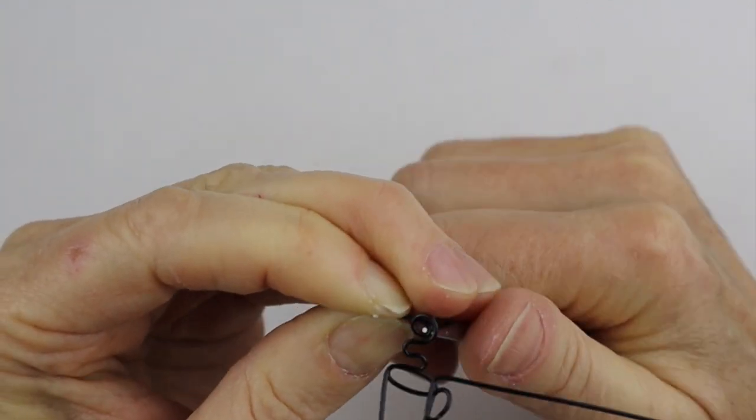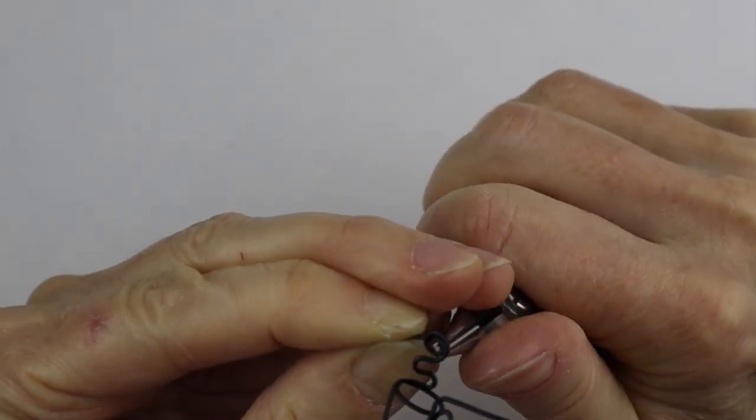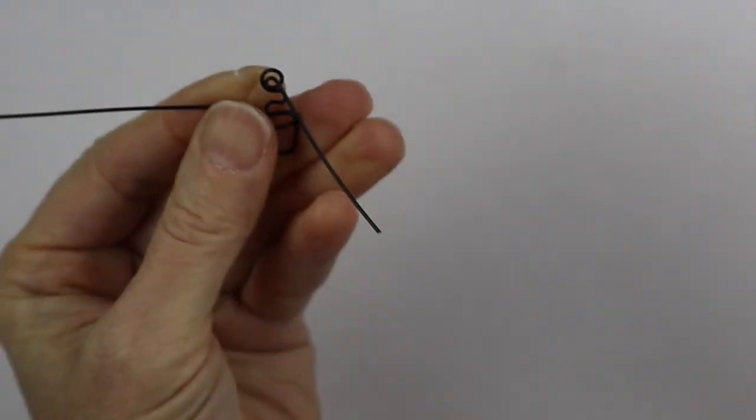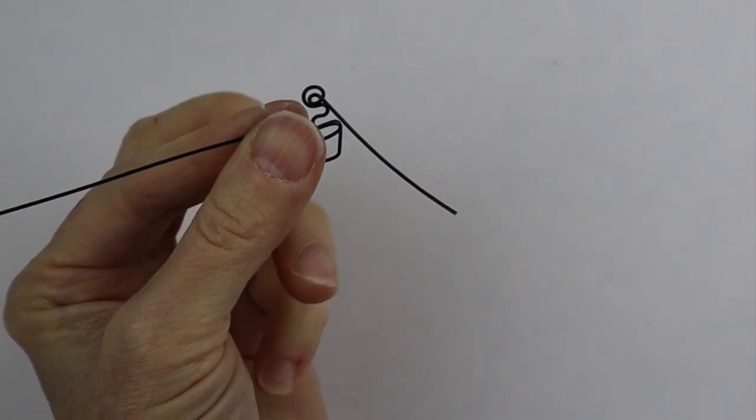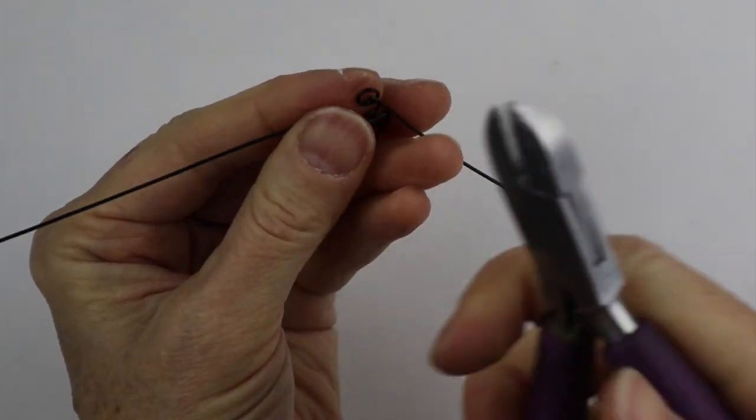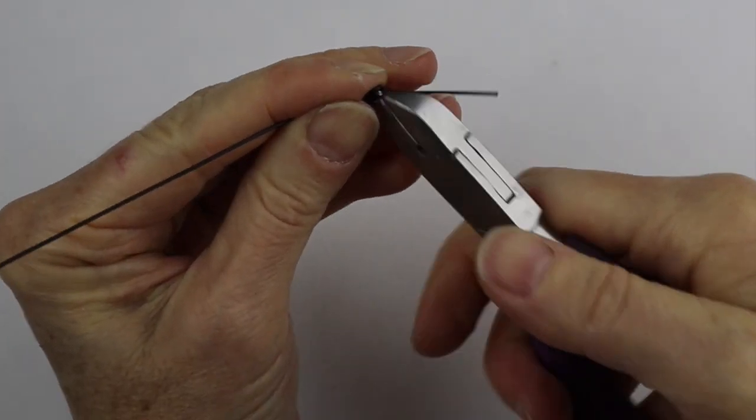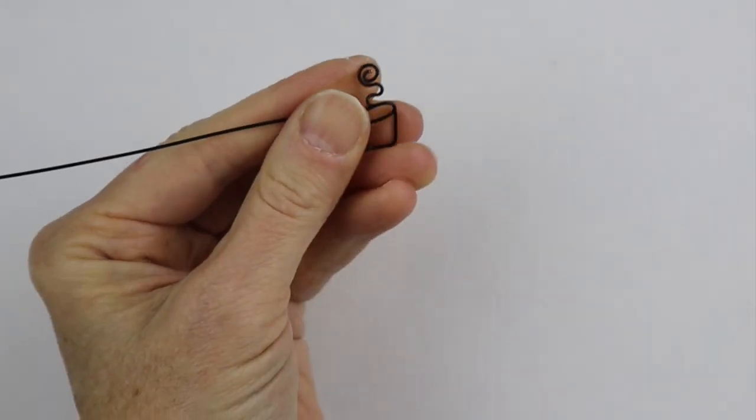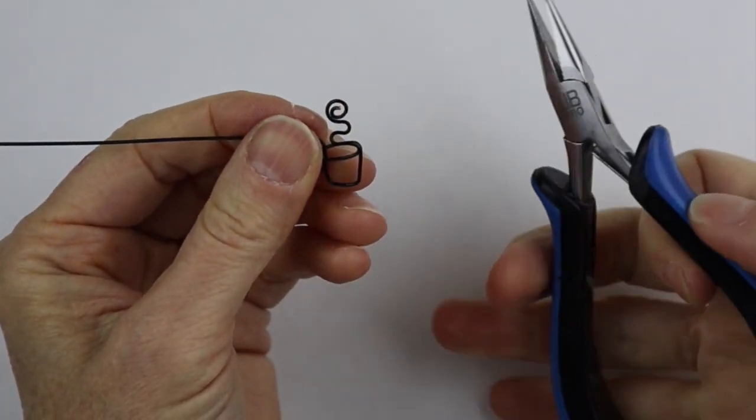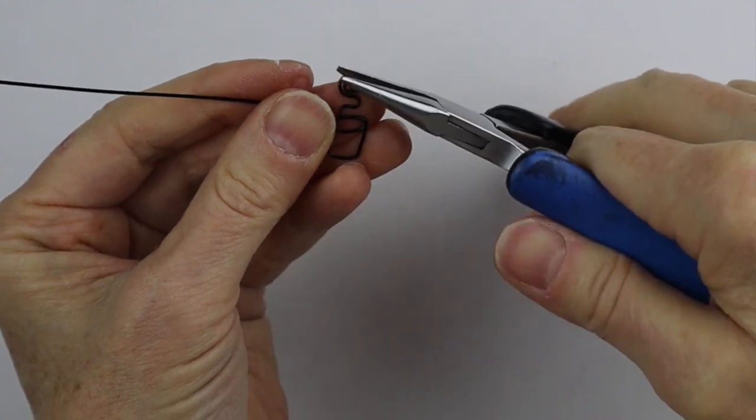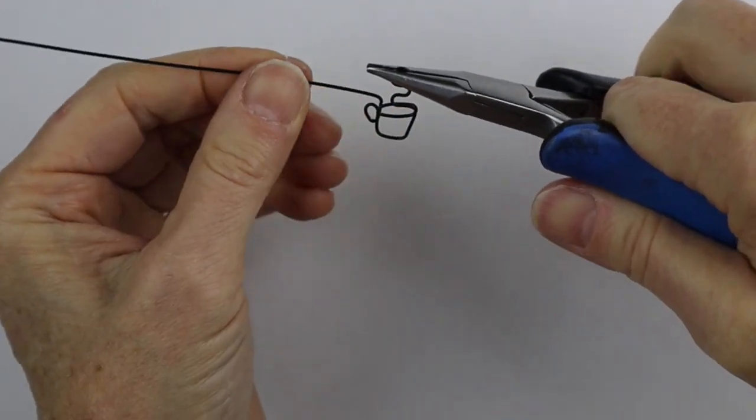So we have sort of a bit of a double spiral there. This one I'm just going to cut off - that's going to be the end of the wire. We'll just cut that off and with our flat pliers just push it in so it's kind of flush like that. So there's your steam.